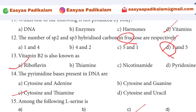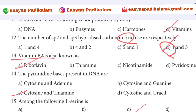13th question: Vitamin B2 is called riboflavin. Flavin is called flavor. Vitamin B2 is called riboflavin — so the answer is riboflavin.